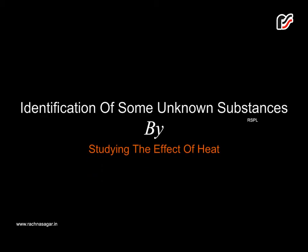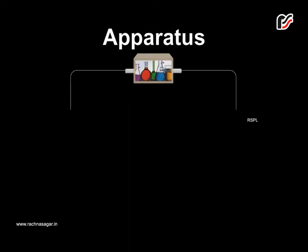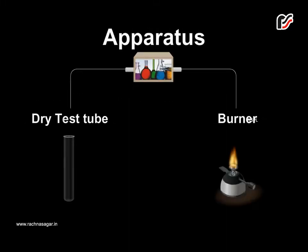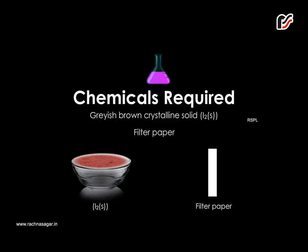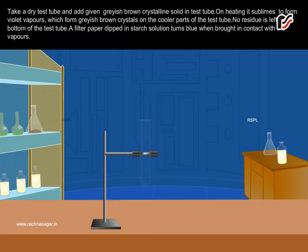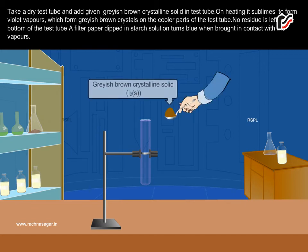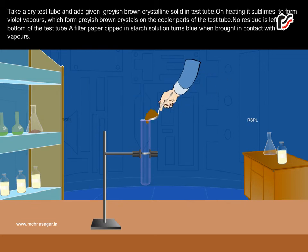Identification of some unknown substances by studying the effect of heat on them. Take a dry test tube and add the given greyish-brown crystalline solid in the test tube. On heating,